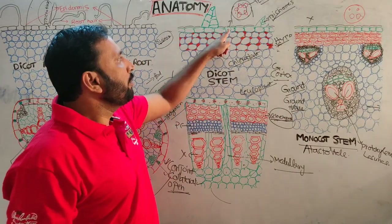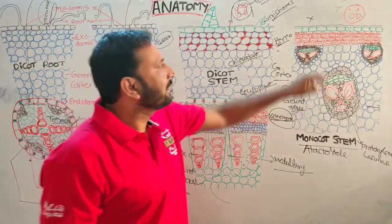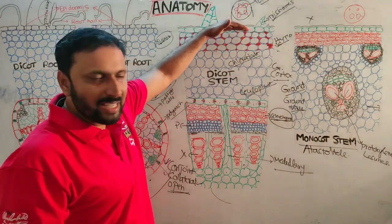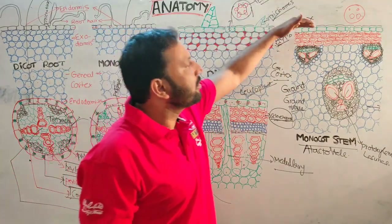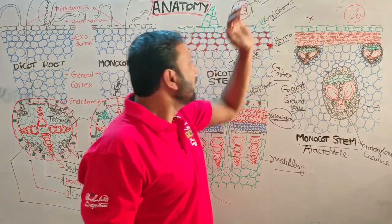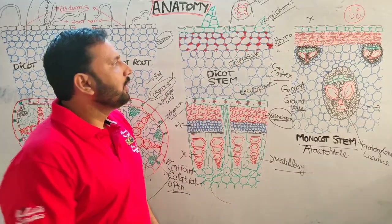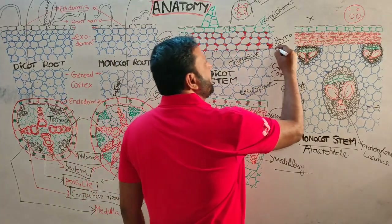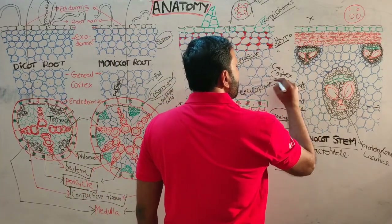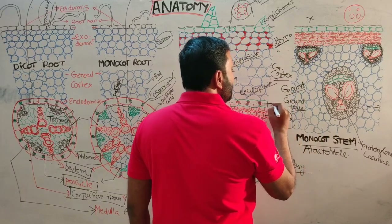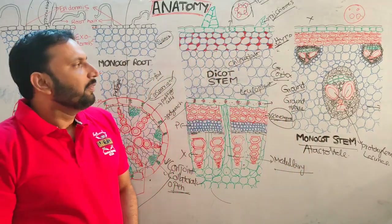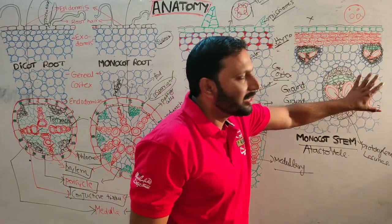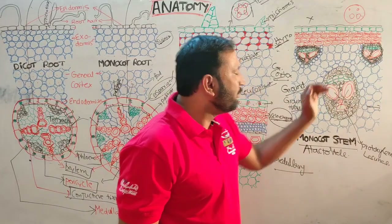Trichomes prevent the entry of pathogenic microorganisms and also control transpiration. Stomata are helpful for exchange of gases, and cuticle controls transpiration — same in both. In dicot stem, the cortex differentiates into three parts: hypodermis, general cortex, and endodermis. That differentiation is not present in monocot stem.